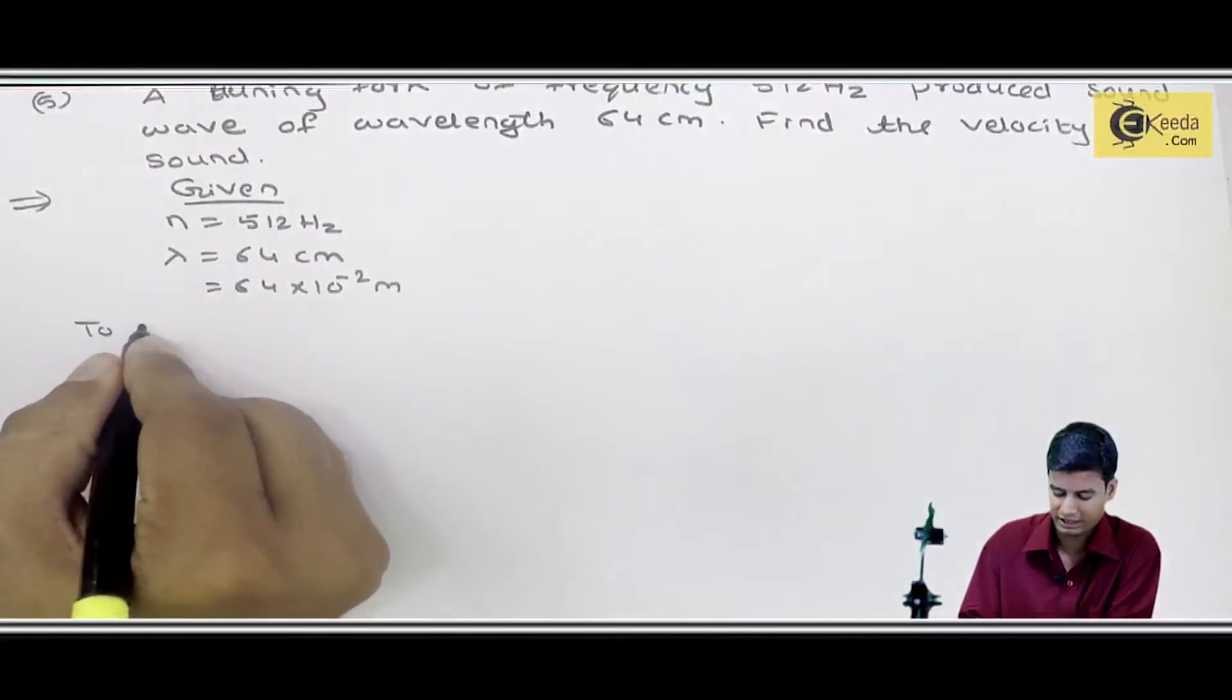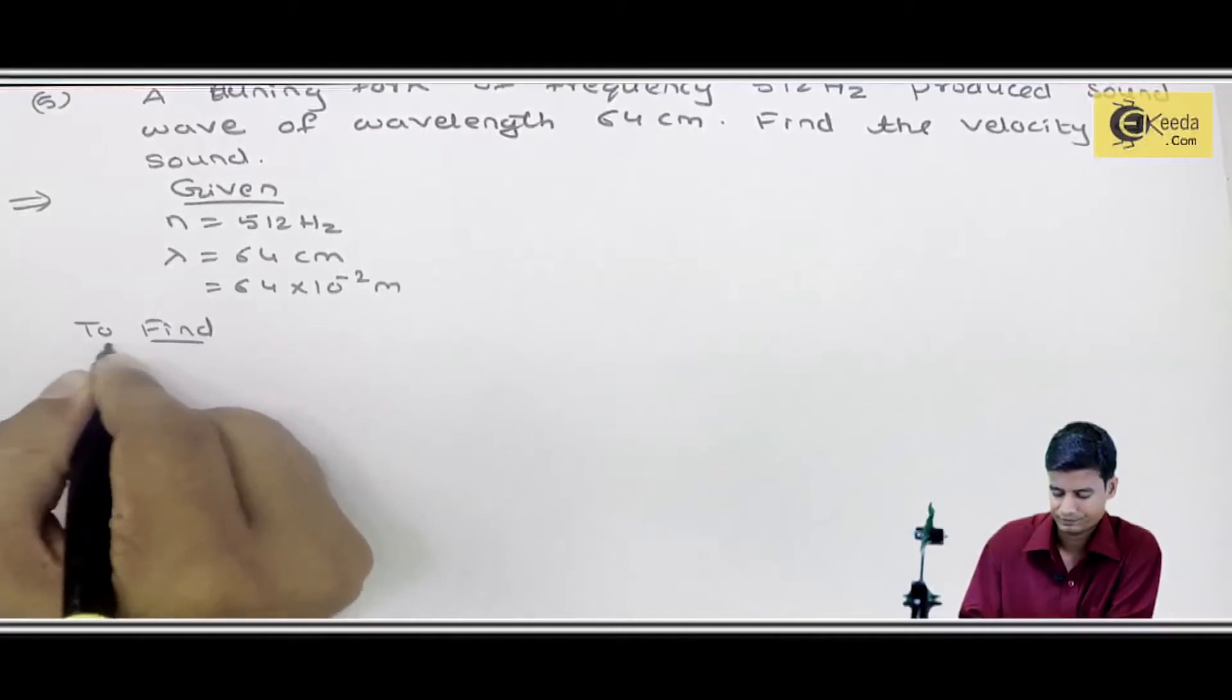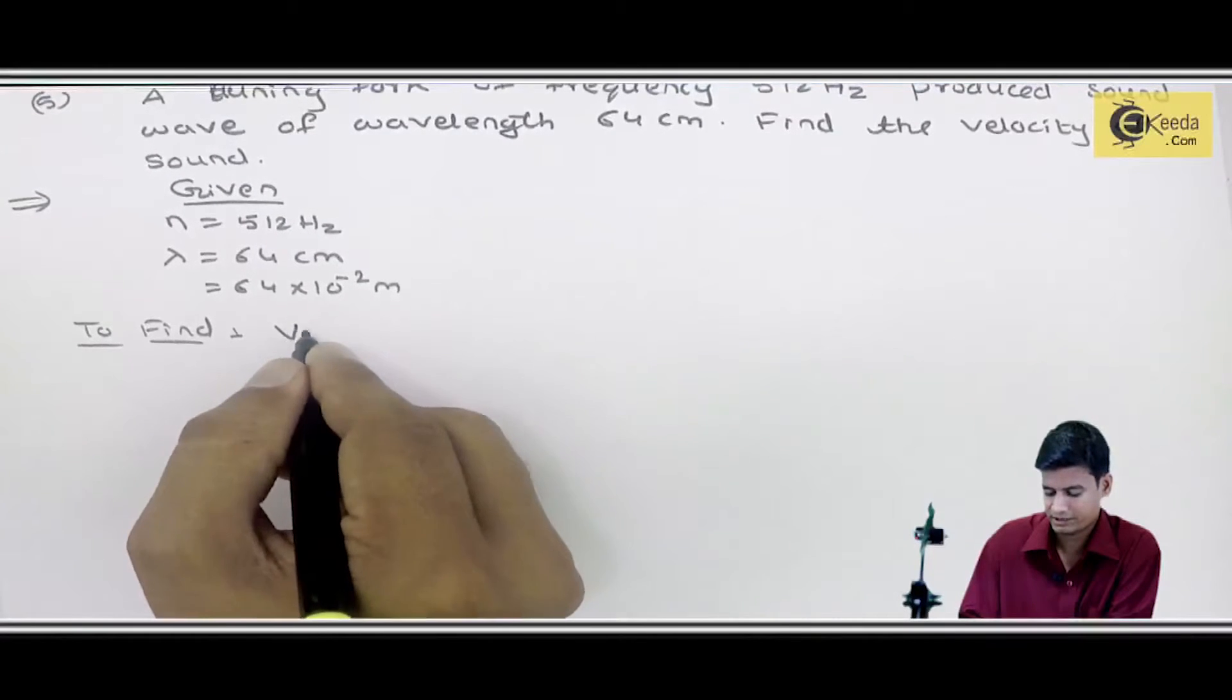Now what do we need to find? To find velocity of sound means V.